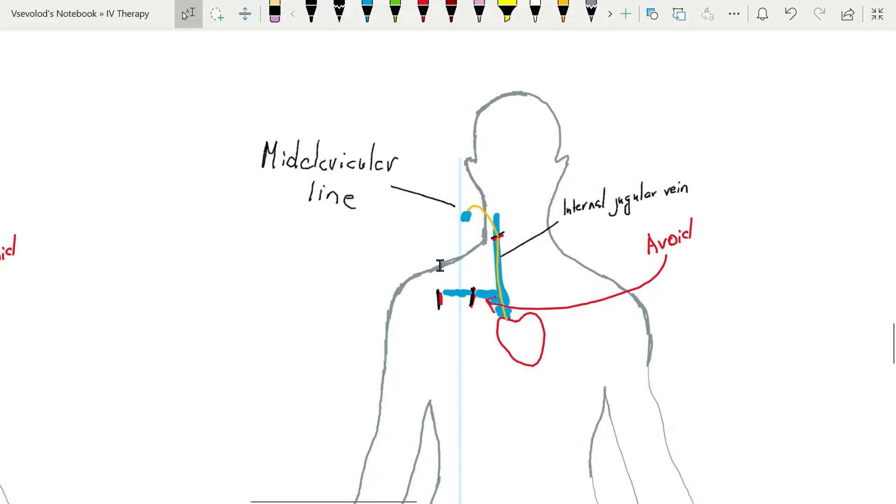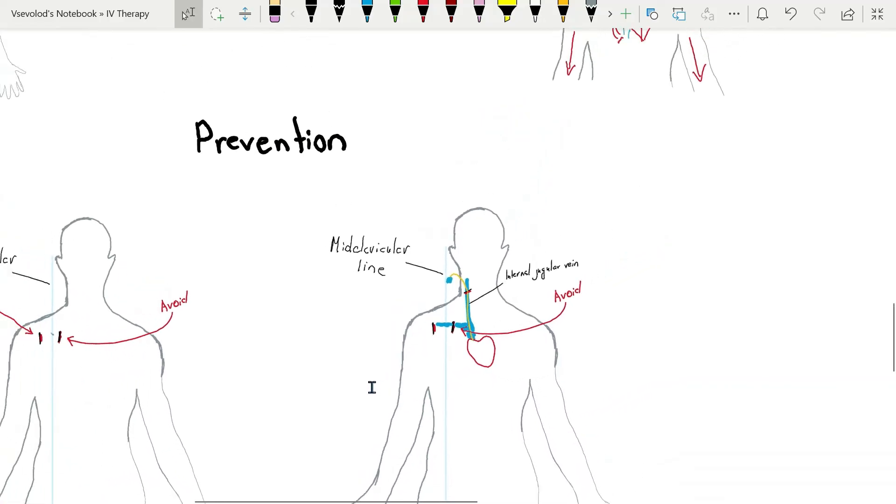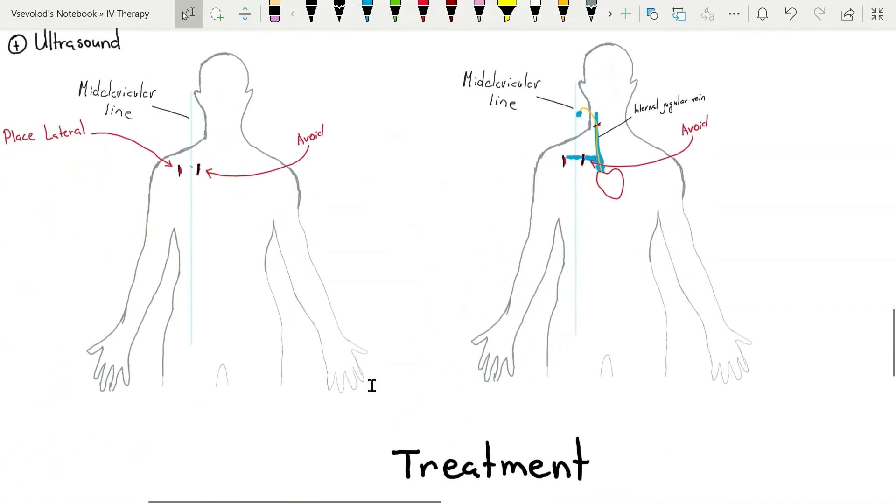Pinch-off syndrome can be prevented by using the internal jugular vein for access rather than subclavian vein. If the subclavian vein is used, it is preferable to access the vein lateral to midclavicular line to reduce the amount of compression on the line.